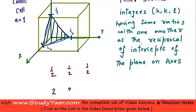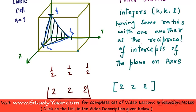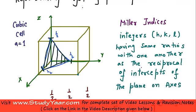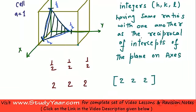We are looking at integers which are having the same ratios as the reciprocal of these intercepts. So the reciprocal would be 2, 2, 2 and hence the Miller indices of this particular plane is 2, 2, 2. Just understand, you are not necessarily looking for smallest set of integers as you were when you were representing your directions. So the Miller indices that represent the plane which is shaded over here is 2, 2, 2.